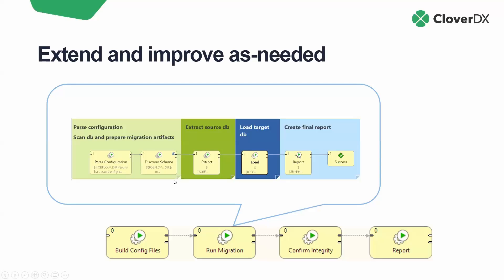We can also extend and improve this as needed. Right now I'm manually typing out configuration files, but this could be extended to build the configuration files automatically — scan an entire DB, get the flavor, build the configuration files without having to explicitly state it, then run the migration: extracting, loading, creating reports, and confirming integrity. The next logical step would be: what's in my target system versus source system? Find any delta or data that didn't make it across, and use that for its own reporting system. There are really endless possibilities in how you want to extend this.